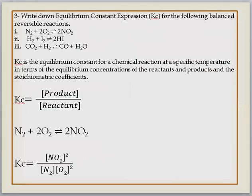Question number 3: write down chemical equilibrium constant expression for the following reversible reactions. Three reactions are given, you have to calculate Kc for them. Now what is Kc and how do we calculate it? Kc is the equilibrium constant for any chemical reaction, measured at specific temperature. If temperature changes, equilibrium concentration or Kc will change. Kc is actually the ratio between concentration of products divided by concentration of reactants.